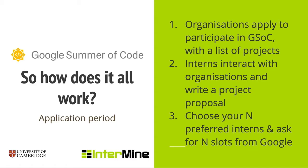So how does all of this Google Summer of Code stuff work? First, organizations apply to participate and present a list of projects. Interns interact with you over several months, making pull requests and writing a project proposal explaining what they'd like to do based on the project ideas you've proposed. At the end of the application period, you request intern slots and Google tells you if you get as many as you've asked for.